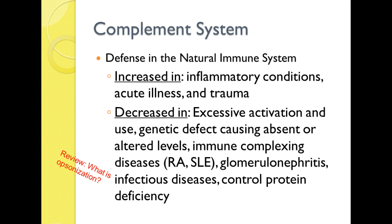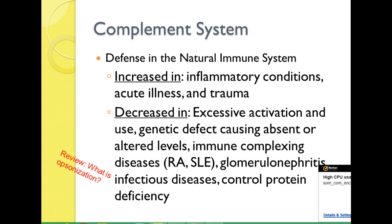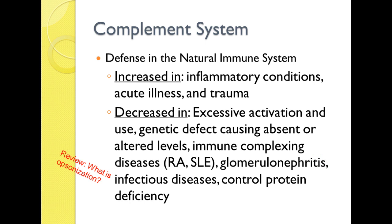We see complement levels decreased when there has been excessive activation or use. Sometimes there's a defect causing an absence or altered level. We can have immune complex diseases happen — rheumatoid arthritis, systemic lupus, glomerulonephritis, infectious diseases, and complement protein deficiency. As a review: opsonization is coating the bacterium with C3B molecules to make it extra tasty — easier for phagocytosis to occur if those things are present on the surface of the bacteria.